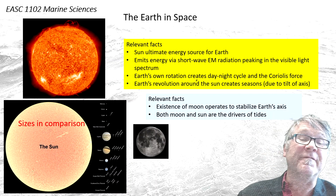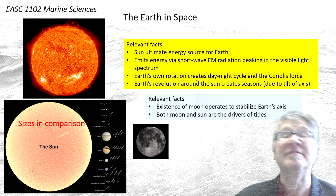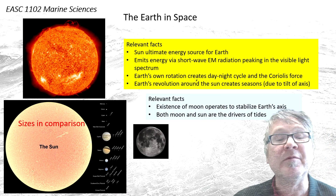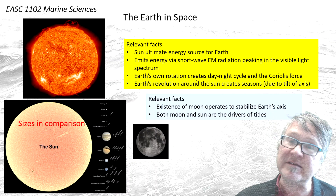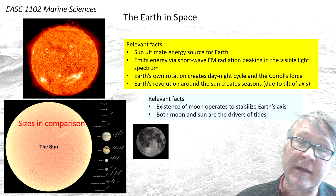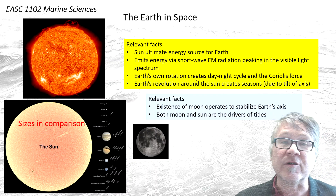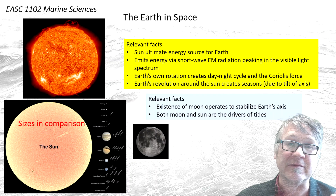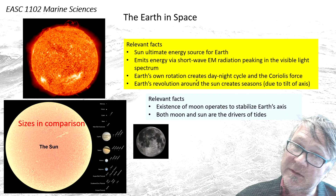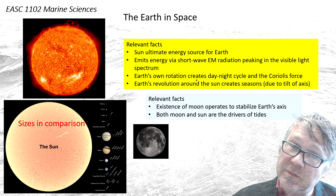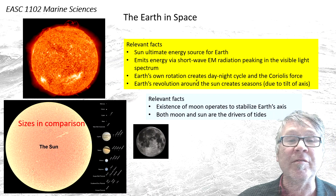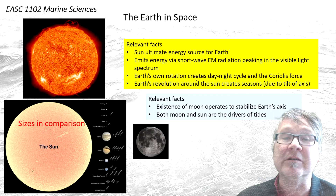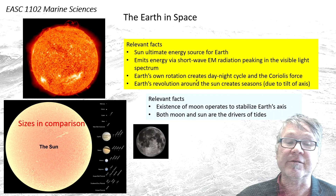A relevant fact: it's the existence of the Moon that stabilizes the Earth's axis, otherwise the seasons could be all over the place. Because of the Moon, the movement of the Earth around the Sun is on a relatively stable trajectory.